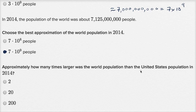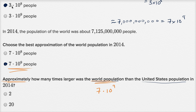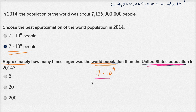Approximately how many times larger was the world population than the United States population in 2014? The answer choices are approximately two, twenty, or two hundred. Using our approximations, the world population was seven times 10 to the ninth power, and the United States population was three times 10 to the eighth. So we can divide our approximation of the world population by our approximation of the United States population: seven times 10 to the ninth divided by three times 10 to the eighth.